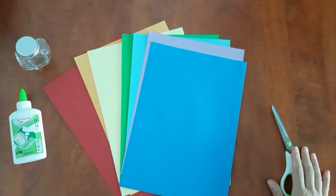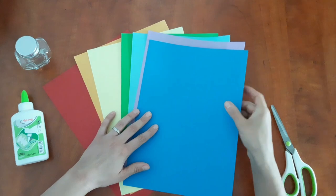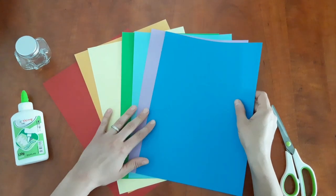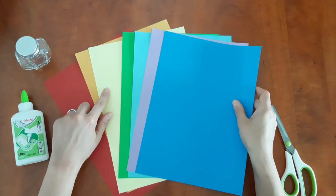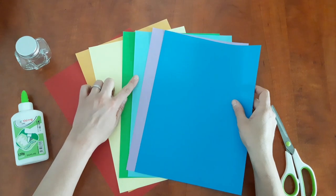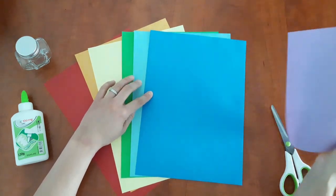We are going to create our 3D rainbow today, and if you're ready, let's get started. We are going to need a pair of scissors, glue, and colored paper. We need the colors of the rainbow: red, orange, yellow, green, blue, indigo, and violet.